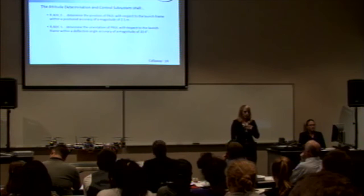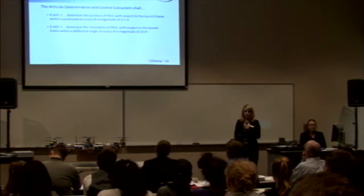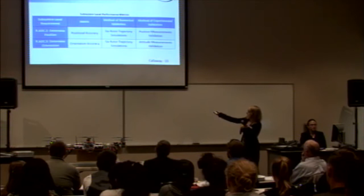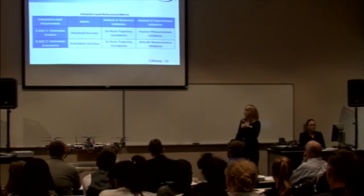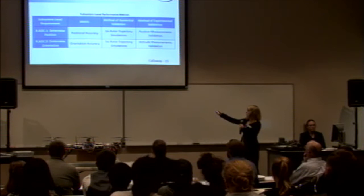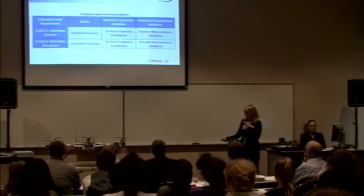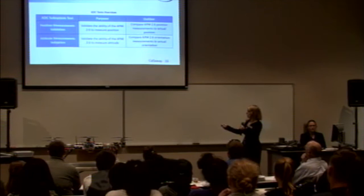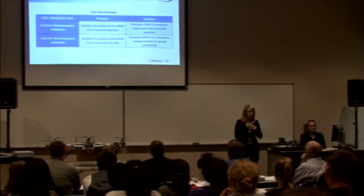Our two requirements are the determination requirements. The attitude determination and control subsystem shall determine the position of Paul with an accuracy of 2.5 meters, and determine the orientation of Paul with a deflection angle accuracy of 10.4 degrees. The control requirements will be shown later in this presentation. Here you can see our performance metrics for our two requirements that we needed to experimentally and numerically validate. We numerically validated with trajectory simulations, and our method of experimental validation was our subsystem tests: position measurement validation, comparing APM measurements to actual measurements, and attitude measurement validation, comparing APM orientation measurements to actual orientation.